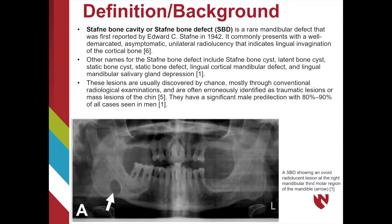It commonly presents with a well-demarcated asymptomatic unilateral radiolucency that indicates the lingual invagination of the cortical bone. Other names for the Staphne bone defect include Staphne bone cyst, latent bone cyst, static bone defect, lingual cortical mandibular defect, and lingual mandibular salivary gland depression. These lesions are usually discovered by chance, mostly through the conventional radiological examination process, and are often erroneously identified as traumatic lesions or mass lesions of the chin.